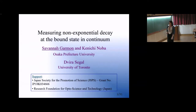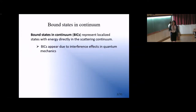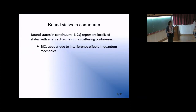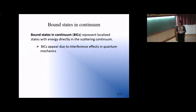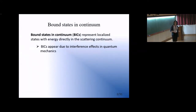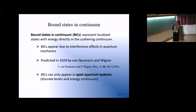I start with a definition. Bound states in continuum represent localized states that counter-intuitively reside directly in the energy continuum, which is usually associated with scattering states that are delocalized. These bound states in continuum, or BICs, appear due to interference effects in quantum mechanics. Essentially, the discrete sector of the system becomes decoupled from the continuum.